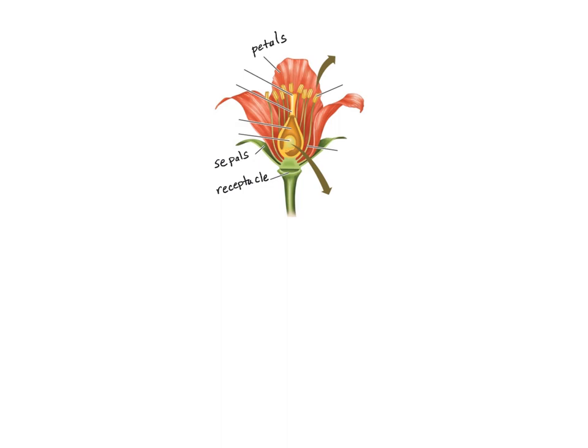Next, let's label the female parts. We're going to start at the top with the stigma. Below that is the style. Then we're going to think about the ovary here. And last but not least, the ovule.